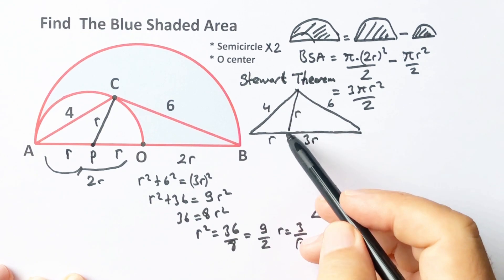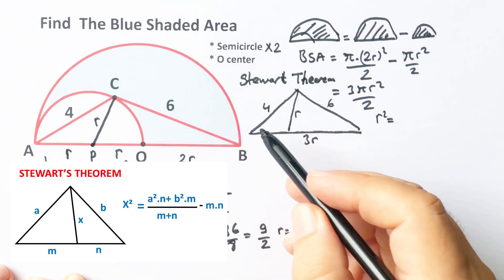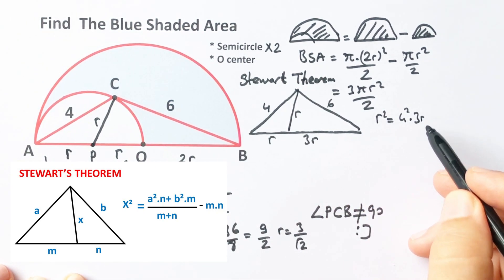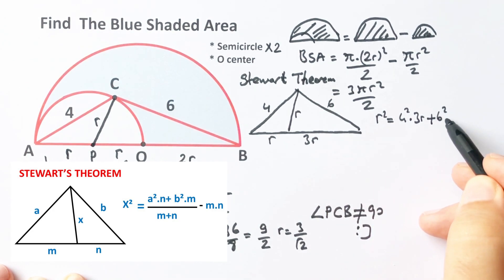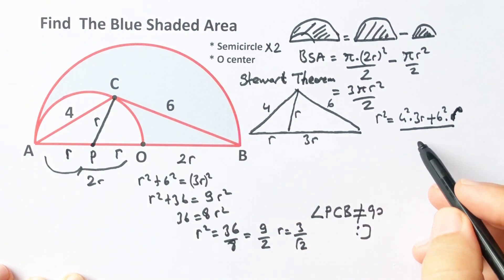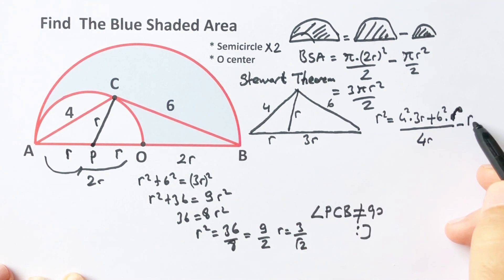According to Stewart's theorem, the square of this length equals 4² times 3r plus 6² times this length over 4r minus multiplication of these two parts.